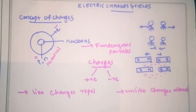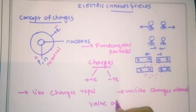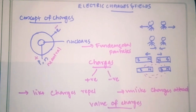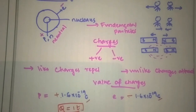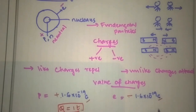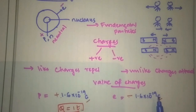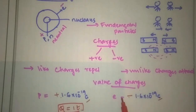Now let's go to the next topic: the value of charges. The proton and electron values are the same magnitude — that is 1.6 × 10 raise to minus 19. The electron is negative 1.6 × 10 raise to minus 19 coulomb, and the proton is positive 1.6 × 10 raise to minus 19 coulomb.